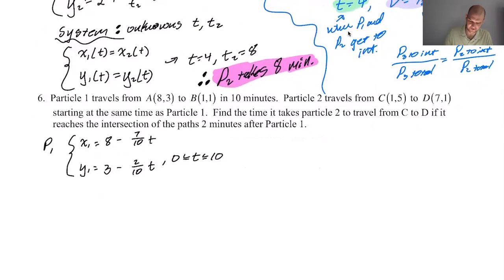Okay, now here comes a twist. Particle 2 travels from C(1,5) to D(7,1), starts at the same time as particle 1. Find the time it takes particle 2 to travel from C to D if it reaches the intersection of the paths two minutes after particle 1. So if particle 1 gets there at T equals 1, particle 2 gets there T equals 3. If particle 1 gets there T equals 7, particle 2 gets there T equals 9. It always gets there two minutes later.